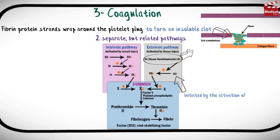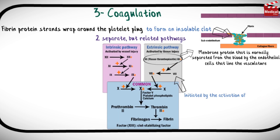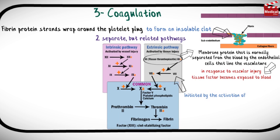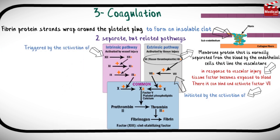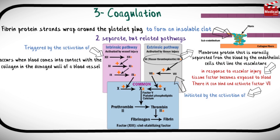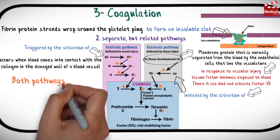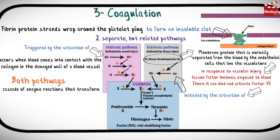The extrinsic system is initiated by the activation of clotting factor 7 by tissue factor, also known as thromboplastin. Tissue factor is a membrane protein normally separated from the blood by the endothelial cells that line the vasculature. However, in response to vascular injury, tissue factor becomes exposed to blood, where it can bind and activate factor 7, initiating the extrinsic pathway. The intrinsic system is triggered by the activation of clotting factor 12, which occurs when blood comes into contact with the collagen in the damaged wall of a blood vessel.